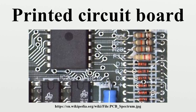Initially, PCBs were designed manually by creating a photo mask on a clear Mylar sheet, usually at two or four times the true size. Starting from the schematic diagram, the component pin pads were laid out on the Mylar and then traces were routed to connect the pads. Rub-on dry transfers of common component footprints increased efficiency. Traces were made with self-adhesive tape, and pre-printed non-reproducing grids on the Mylar assisted in layout. To fabricate the board, the finished photo mask was photolithographically reproduced onto a photoresist coating on the blank copper-clad boards.